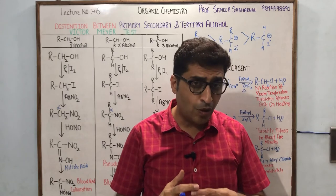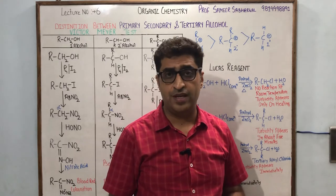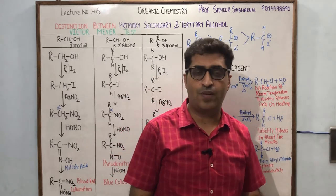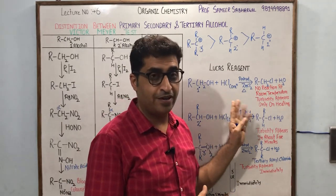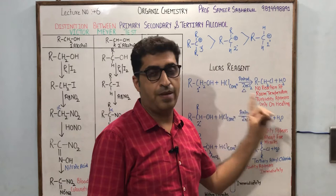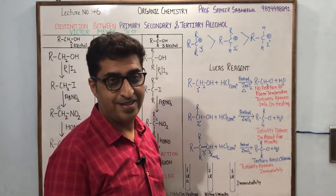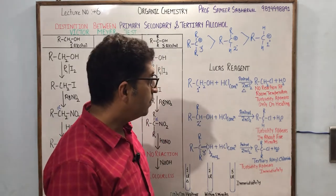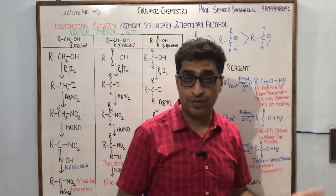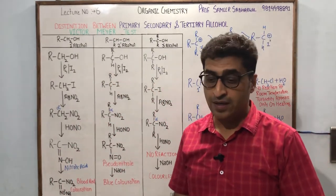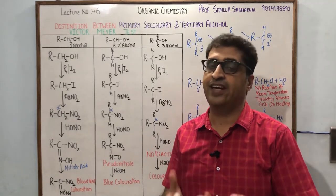If turbidity does not appear at room temperature — remember, we are doing the reaction at room temperature — and if we have only three types of alcohols, then it is definitely primary alcohol, because the 1° carbocation is the least stable. Turbidity appears only on heating, because heating provides the activation energy that activates the reaction.